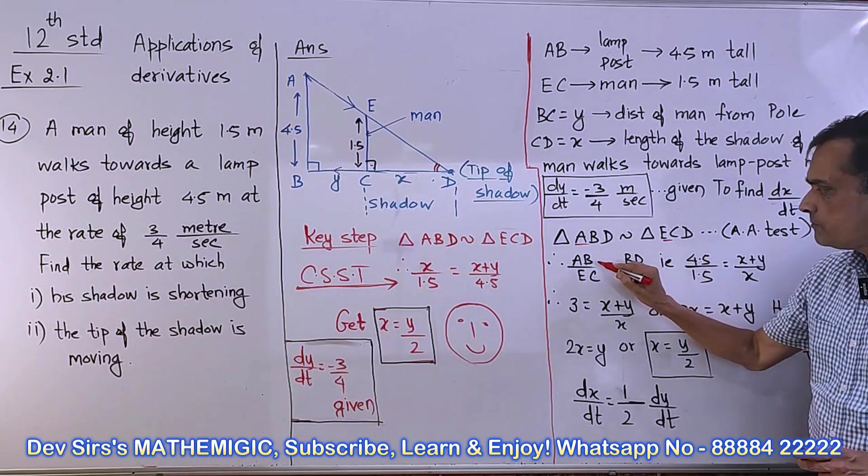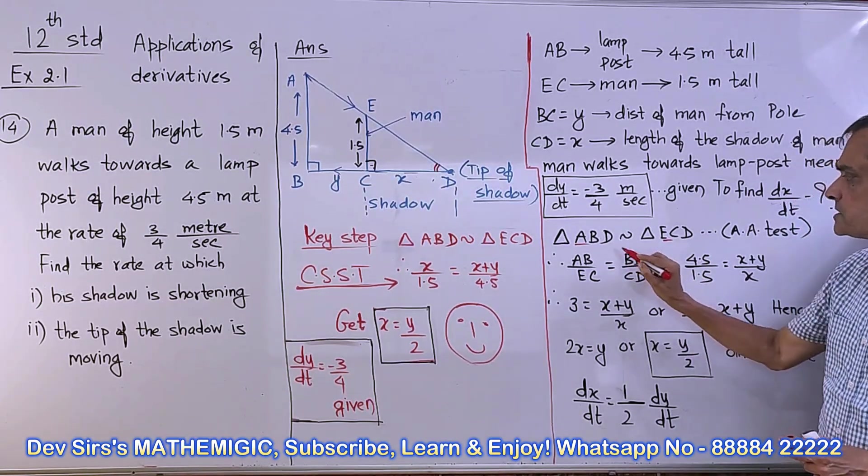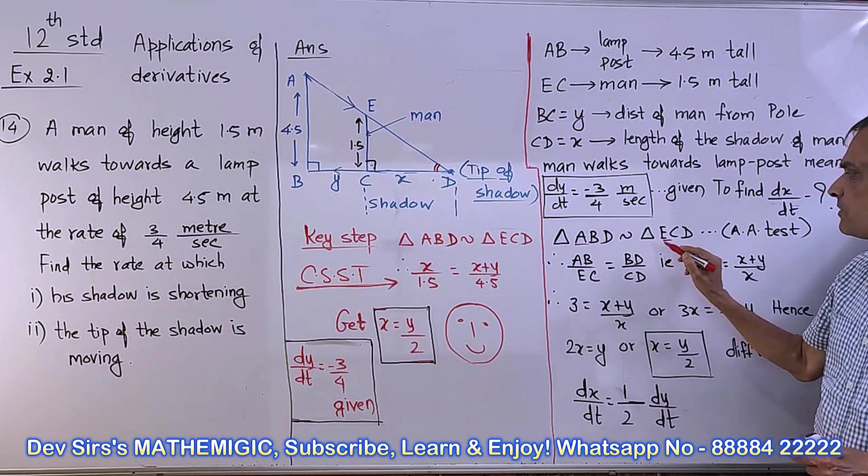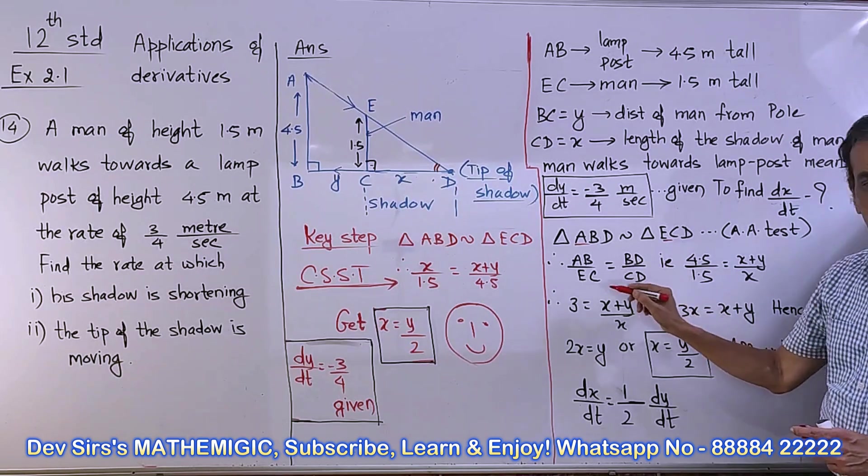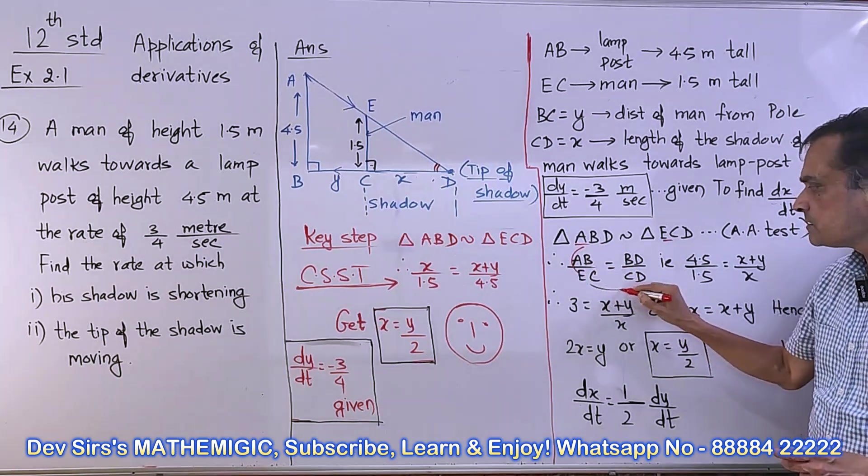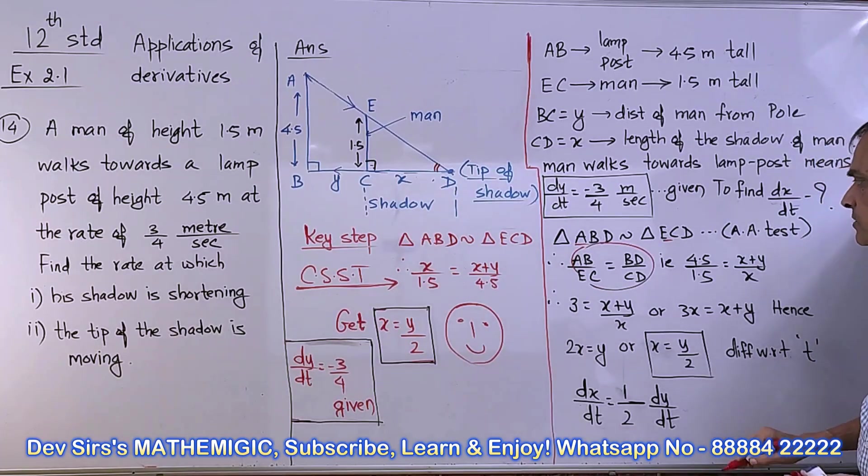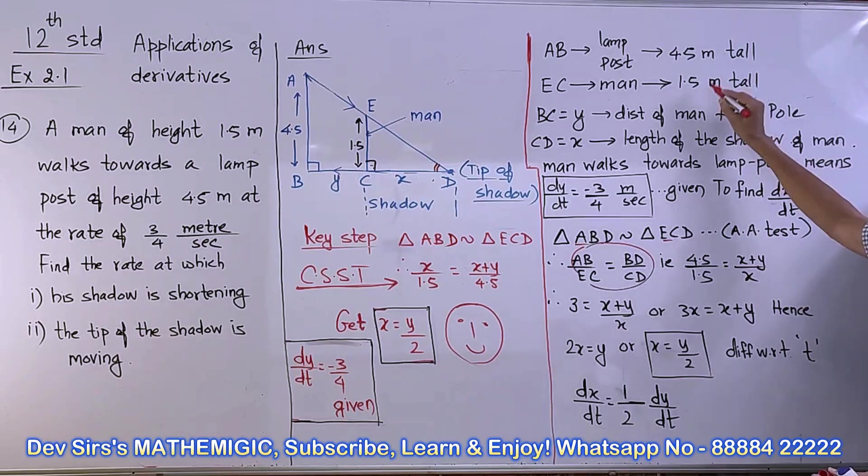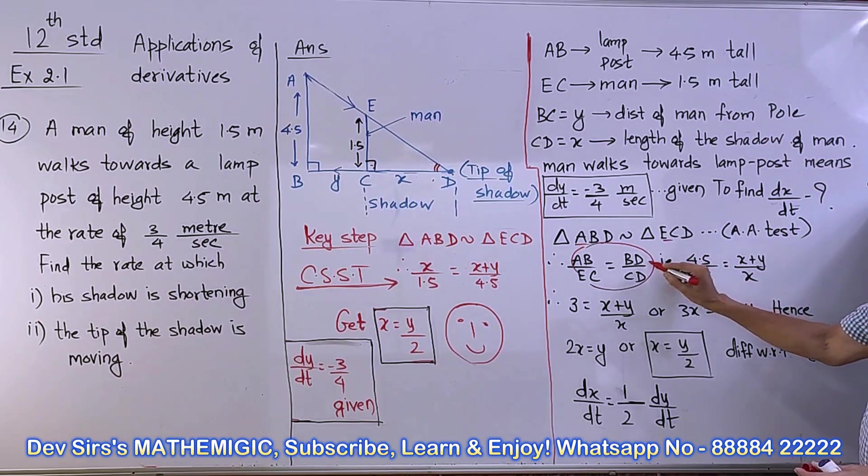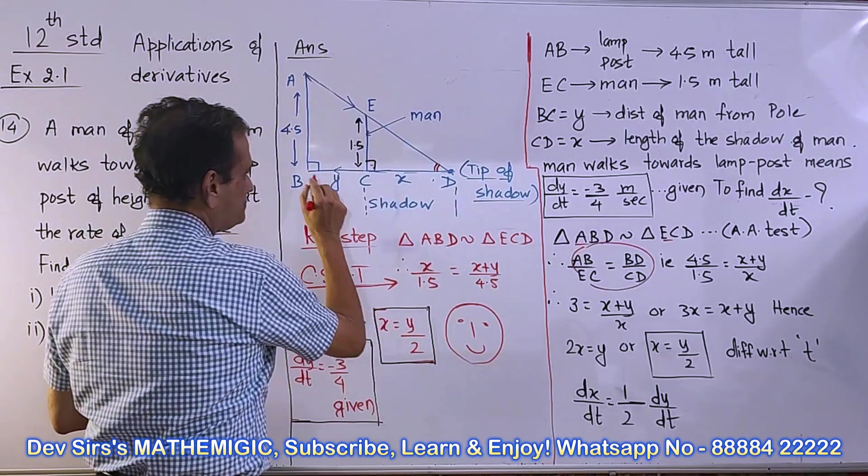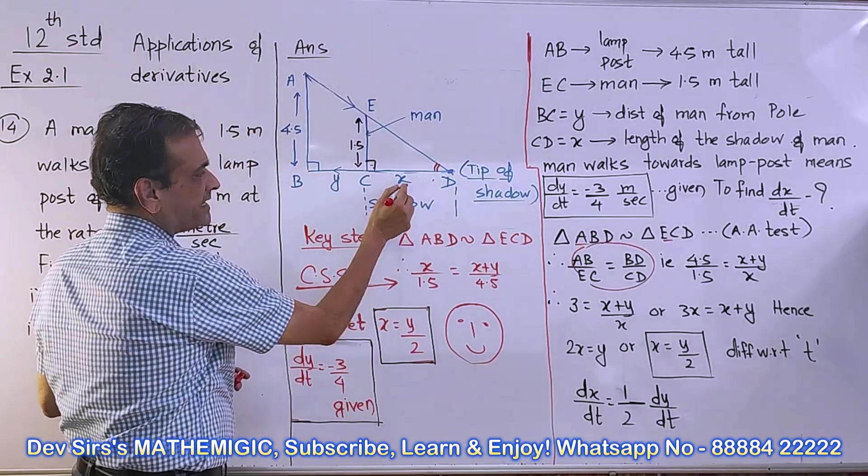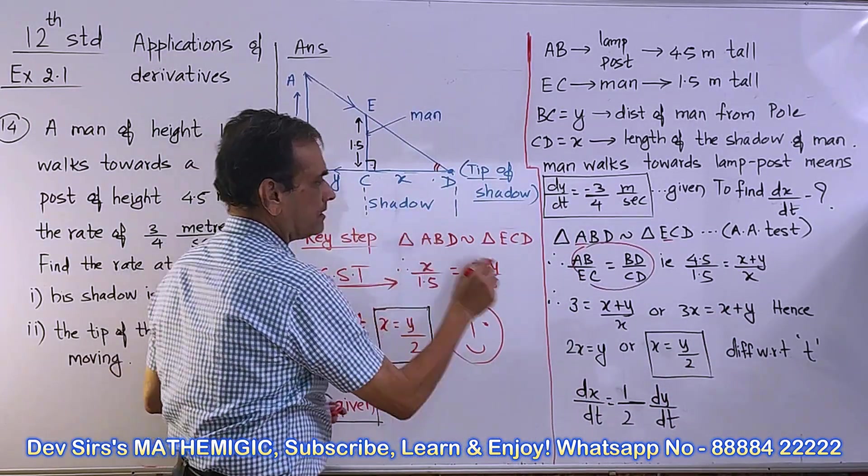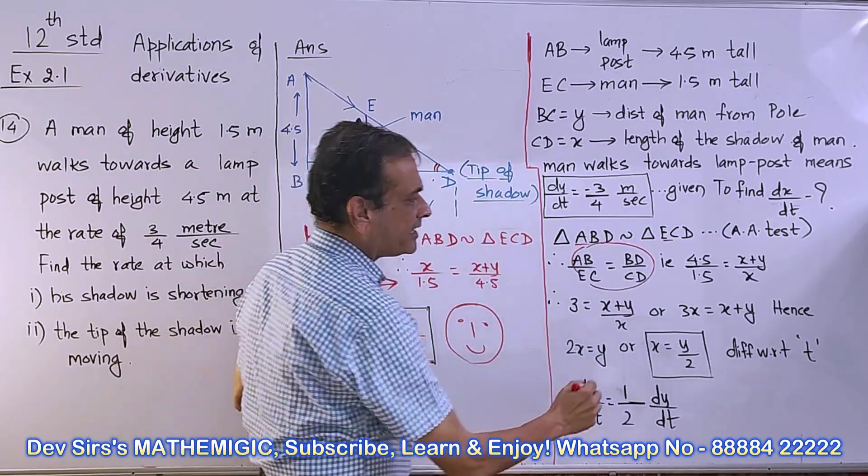After the two triangles are similar, corresponding sides: AB/EC = BD/CD. Substitute the values: AB is 4.5, EC is 1.5, BD will be X+Y, CD is X. So this is our main equation now.